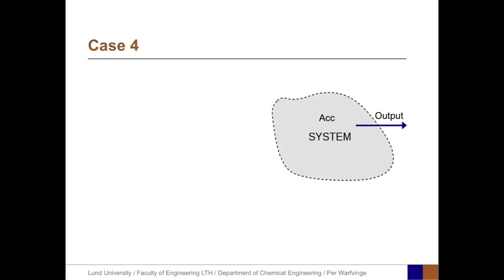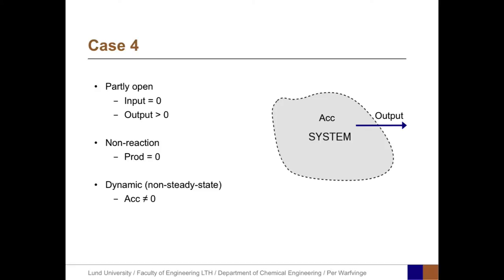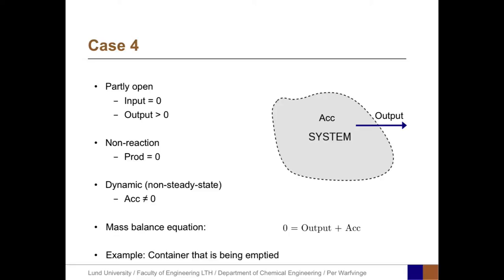A fourth example is a partly open system where the input equals zero but the output is greater than zero. If we have no reaction, the production term equals zero, but we have an accumulation term that differs from zero — and in this case the accumulation term must be negative. The mass balance equation is: zero equals output plus accumulation. An example is a container being emptied, such as a balloon with a hole in it — we have an output of air and the accumulation of air within the balloon is negative.